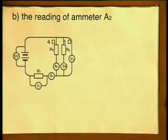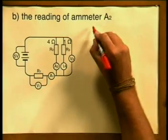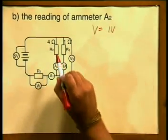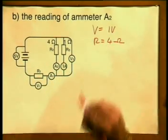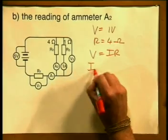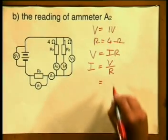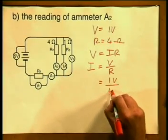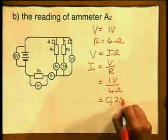Now we can find the current through R2, in other words calculate the value on ammeter A2. We know that the potential difference across R2 will be 1 volt and that the resistance of R2 is equal to 4 ohms. We know V is equal to I times R, so rearranging, I is equal to V divided by R. Substituting in 1 volt divided by 4 ohms, the current is equal to 0.25 amperes.